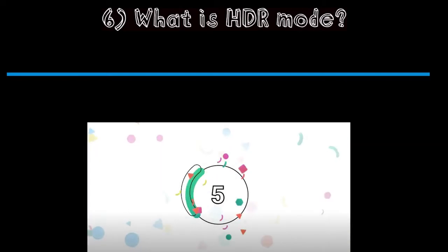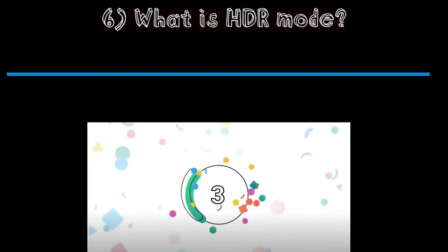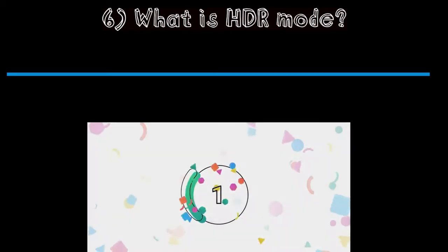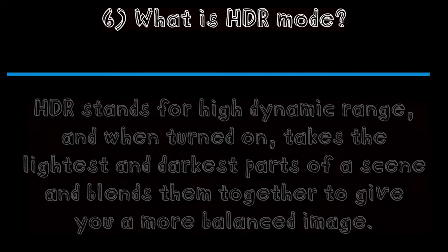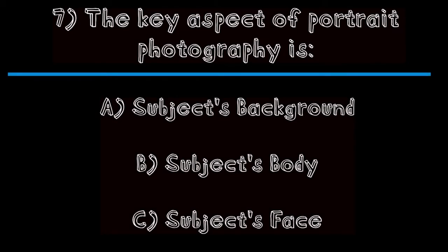Question six: what is HDR mode? The correct answer is HDR takes the lightest and darkest parts of a scene and blends them together. The last question: the key aspect of portrait photography is — a) the subject's background, b) the subject's body, or c) the subject's face? The correct answer is c — the subject's face.